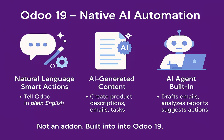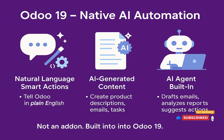Now comes Odoo 19, and this is where things get exciting. Native AI is now part of Odoo. Here's what's new: Natural language smart actions. You can tell Odoo what to do in plain English. For example, type 'send reminders to customers with overdue invoices' and Odoo will create the automation for you. No code, no manual configuration — just type and go.